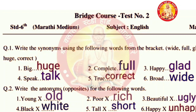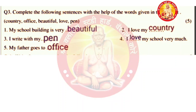Now we will go for question number 3: complete the following sentences with the help of the words given in the bracket — country, office, beautiful, love, and pain. First sentence: my school building is very beautiful. Second: I love my country. Third: I write with my pen. Fourth: I love my school very much. Fifth: my father goes to office.